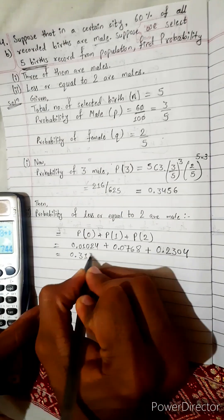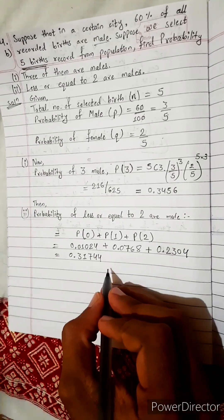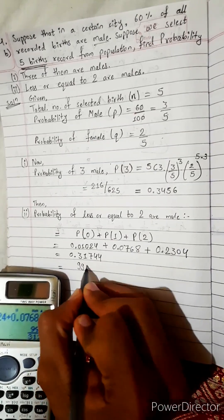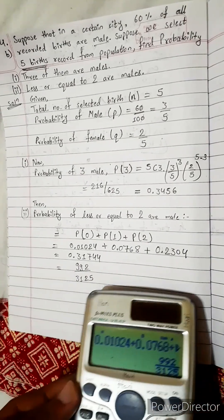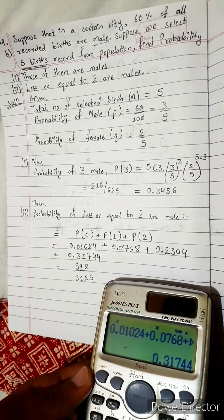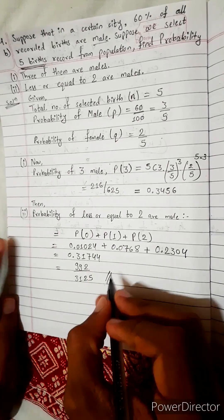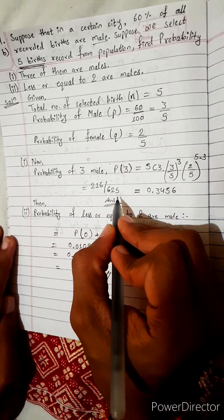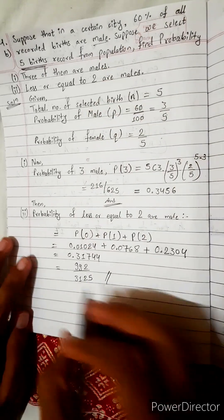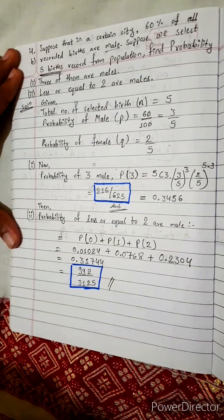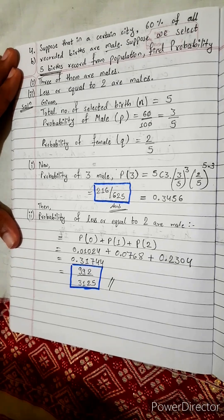Don't copy this. Let me check answer, if it is correct then only copy. Let's write this in fraction: 992 divide by 3125. This is same thing, 0.31744. Answer is given in fraction so we write in fraction. This is first answer 216 divide by 625, and this also correct. Now time to do next question. We found the answer, now be ready for next question. Bye bye.